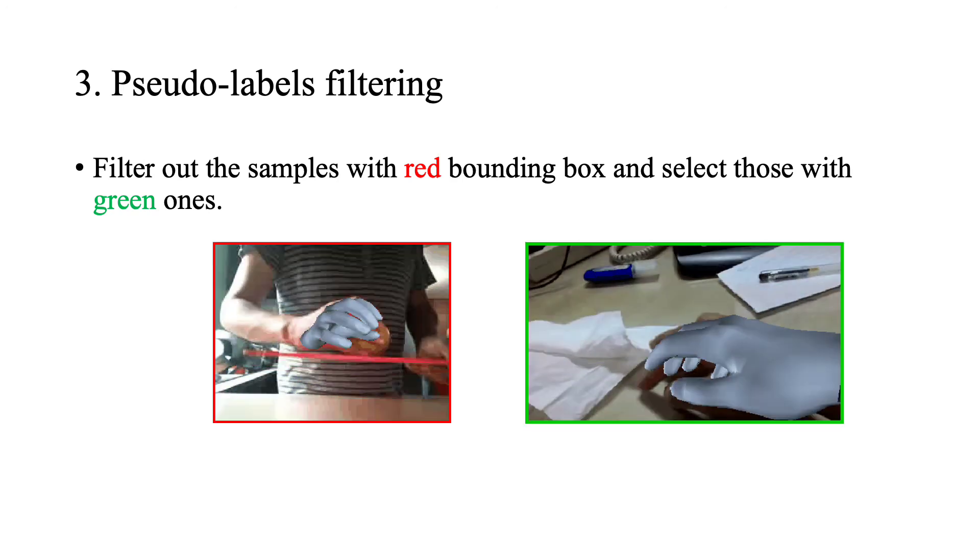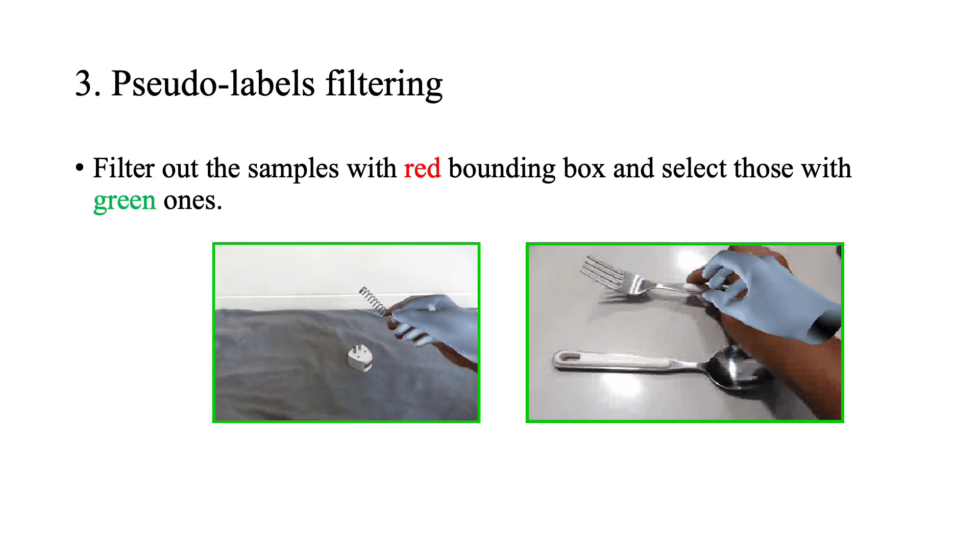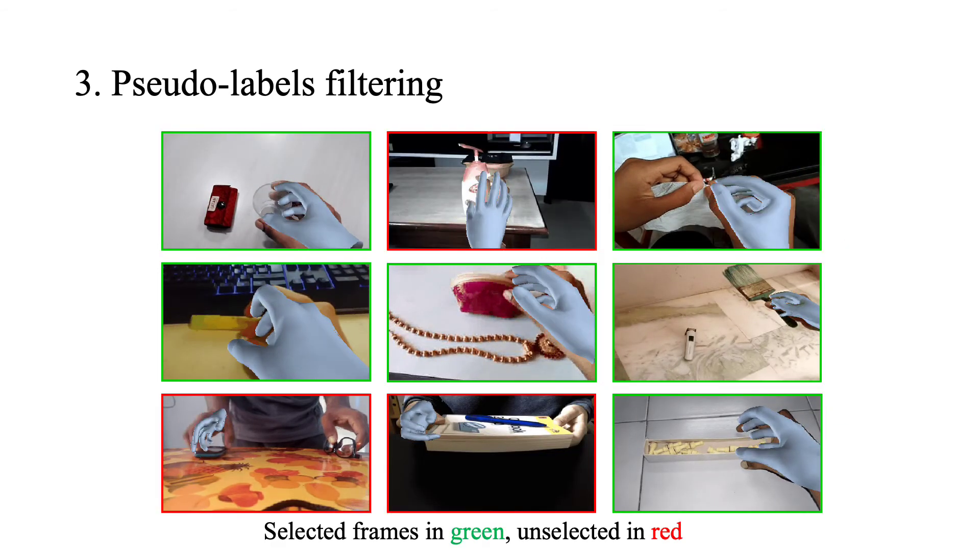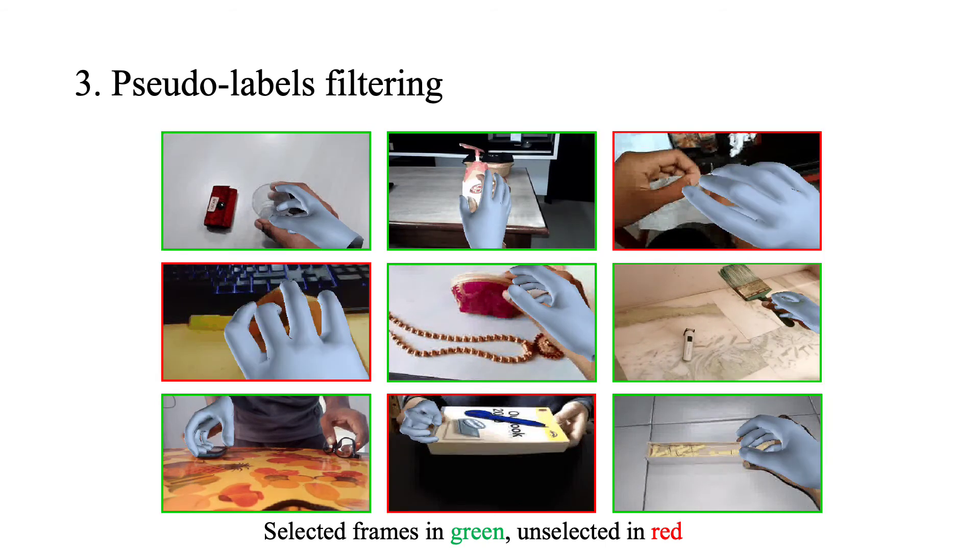The obtained pseudo-labels on the something-something dataset can be seen in the video. The selected frames are in green, unselected ones in red. Those selected pseudo-labels cover a variety of hand instances, different daily objects, and interaction patterns.